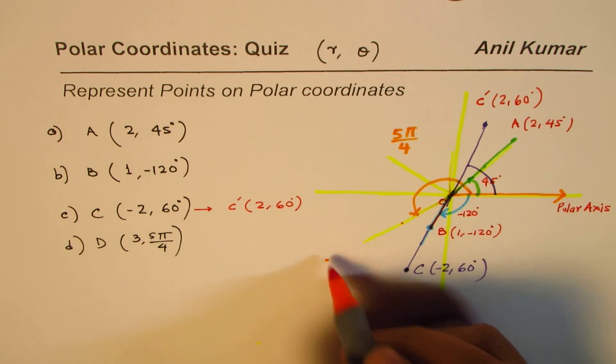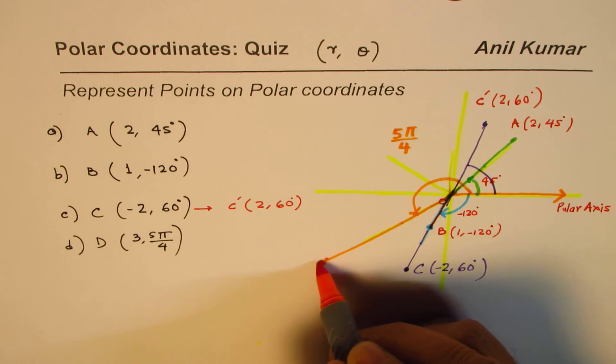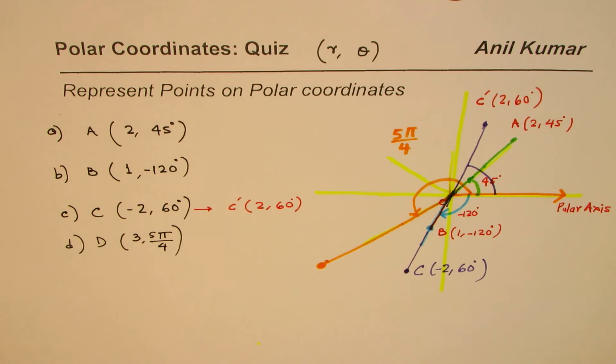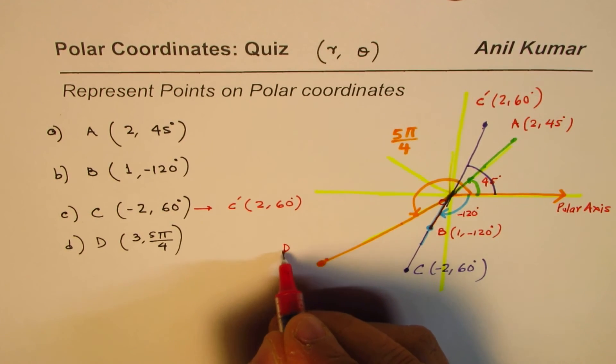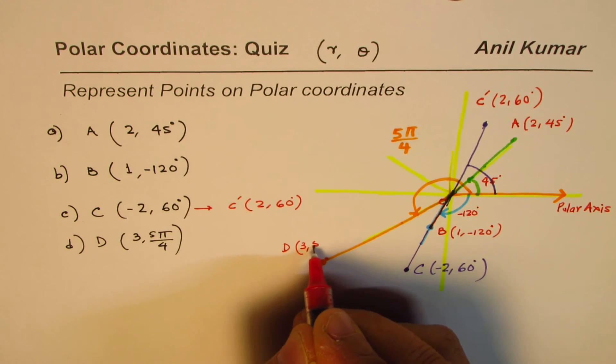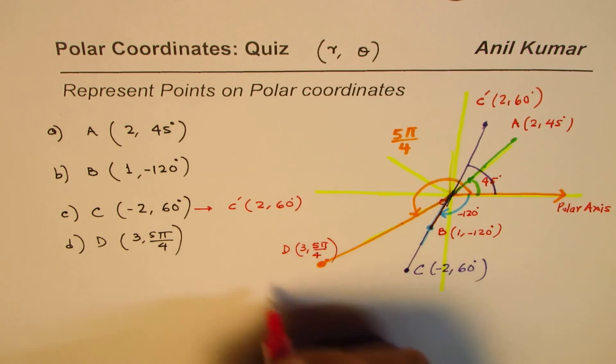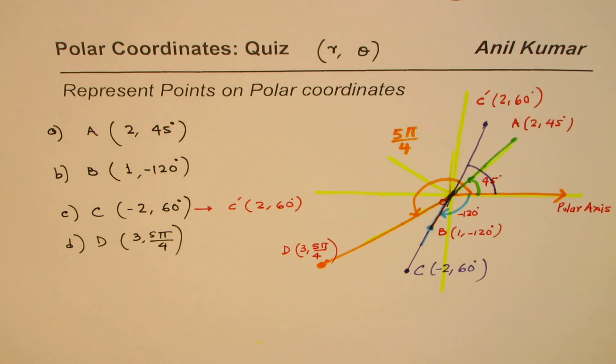And the magnitude is 3 units, so let's say this is my 3 units. So we said this is the point D, which is (3, 5π/4). So that is how we can actually plot all these angles.